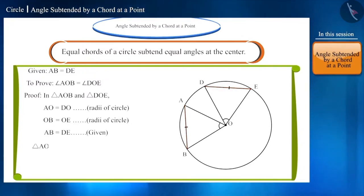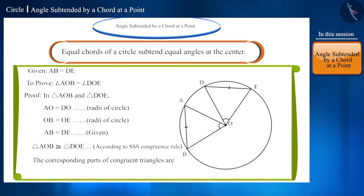Therefore, both these triangles are congruent according to the SSS congruence rule. Hence, angle AOB will be equal to angle DOE.